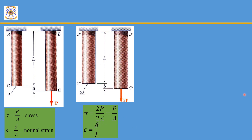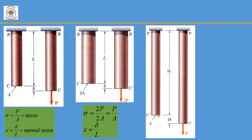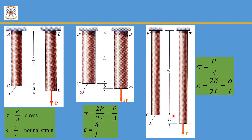In the third case study, the beam has cross-sectional area A, a change in length of 2 delta, an original length of 2L, and load P. Therefore stress sigma equals load divided by area, which is P divided by A. For strain, change in length is 2 delta and original length is 2L, so the 2s cancel and epsilon equals delta divided by L.